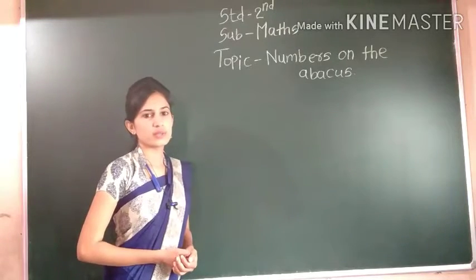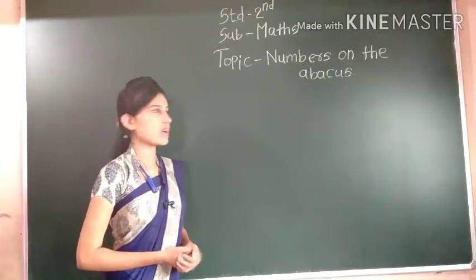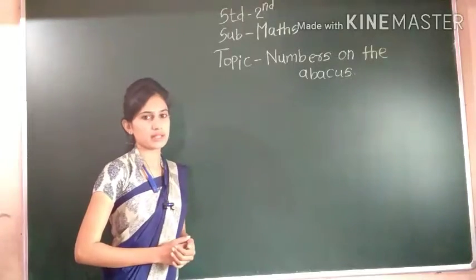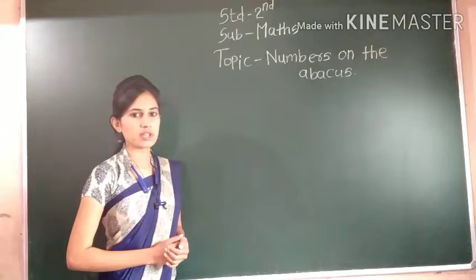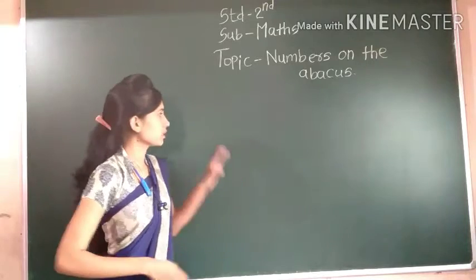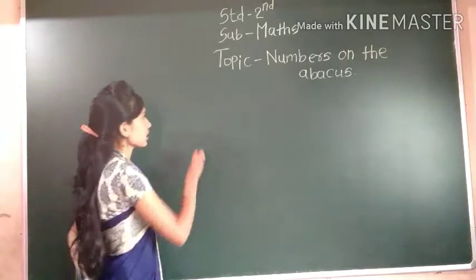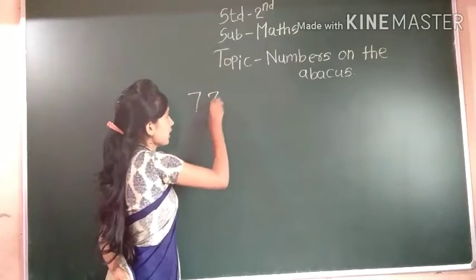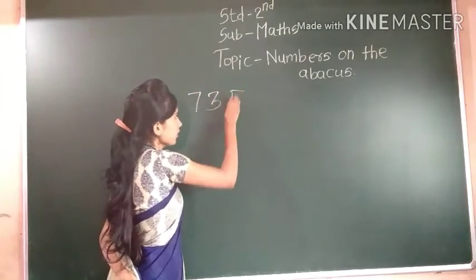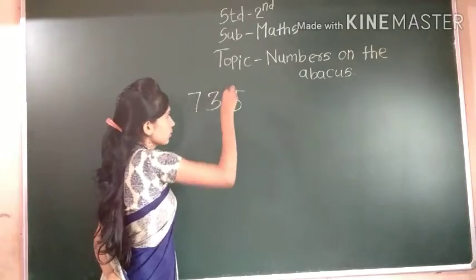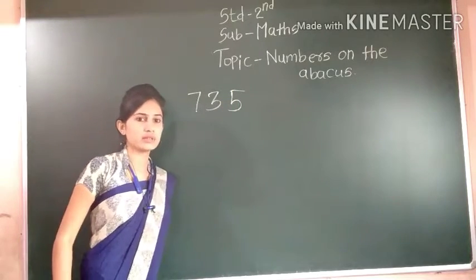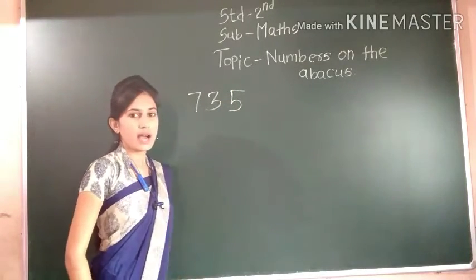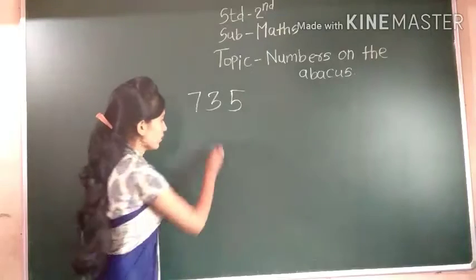Good morning students. Today we are going to start numbers on the abacus. Numbers on the abacus. 735 is represented on the abacus.